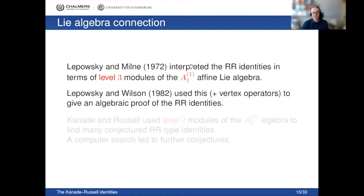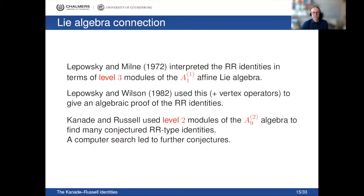Affine Lie algebras are described by affine root systems. Lepowsky and Wilson used vertex operator machinery to give a purely algebraic proof of the Rogers-Ramanujan identities. What Canada and Russell actually did was consider level-2 modules of the A₉⁽²⁾ algebra — a more complicated affine Lie algebra — and using that they were able to find many conjectured Rogers-Ramanujan type identities, though without algebraic proofs.